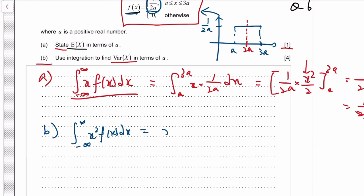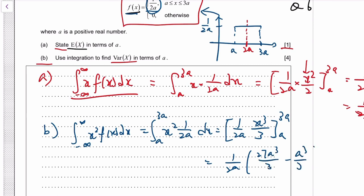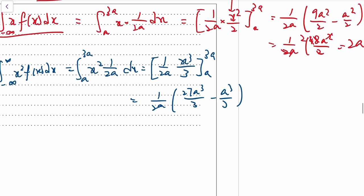So we'll do this first. It's x² times 1 over 2a. Integral, that's x³ over 3. Similarly, 3³ is 27, minus a³. So that's 26a³ over 6a. Over 2 is 13, a³ over 3a. This a cancels, so it's 13a² over 3.